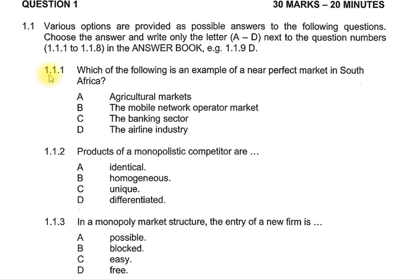Question 1.1.1: Which of the following is an example of a near-perfect market in South Africa? We need to look at the keyword — a near-perfect market. Keep in mind that in reality we do not have perfect markets. The options are agricultural markets, mobile network operators, the banking sector, and the airline industry. The correct answer is A — agricultural markets.